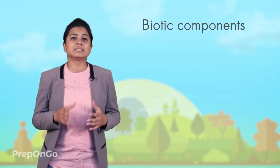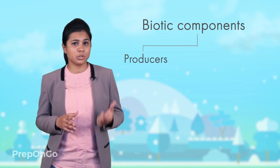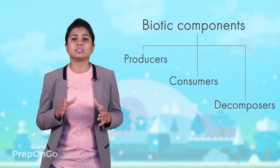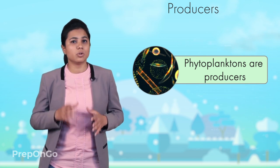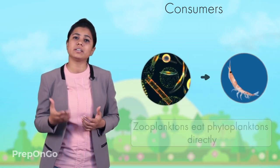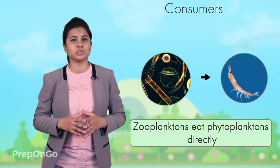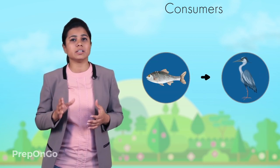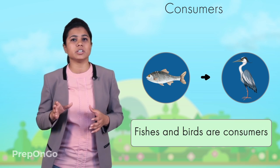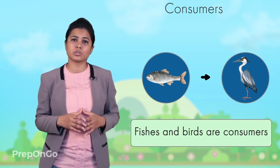The biotic components can be further divided into producers, consumers, and decomposers depending upon their role. In the case of ponds, the phytoplanktons produce their food by the process of photosynthesis, so they are called producers. Consumers consume food prepared by the producers either directly or by consuming other animals. For example, zooplanktons eat phytoplanktons directly, so they are consumers. The fishes consume zooplanktons and the birds consume fishes, so the fishes and the birds are also consumers.